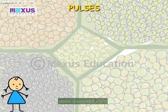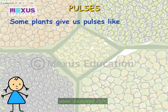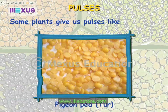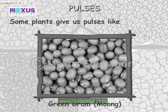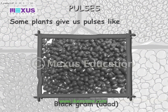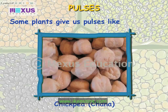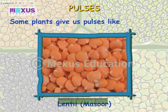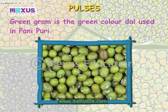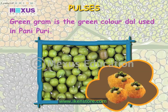Pulses. Some plants give us pulses like Pigeon Pea, Tuwar, Green Gram, Moong, Black Gram, Urad, Chickpea, Chana, Lentil and Masoor. Green Gram is the green colour daal used in Pani Puri. Mmm, yummy!